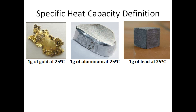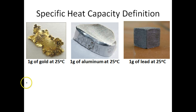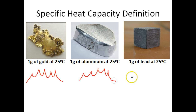So let's take a look at an example. Let's suppose I've got three substances: one gram of gold at 25 degrees Celsius, one gram of aluminum at 25 degrees Celsius, and one gram of lead at 25 degrees Celsius. So I have three substances here, all with the same masses and all at the same starting temperature. What we want to know is how much thermal energy it will take to raise the temperature of each one of these substances one degree Celsius.